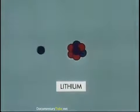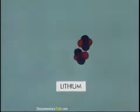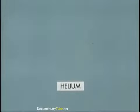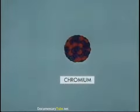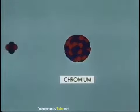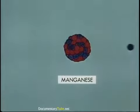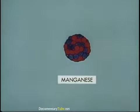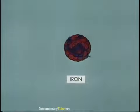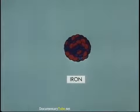He transmutes lithium into helium with a hydrogen nucleus as the projectile. By striking the nucleus of a chromium atom with a helium nucleus, he changes it into radioactive manganese with the emission of a proton. Manganese, in turn, decays to iron with the emission of a beta particle and gamma ray.